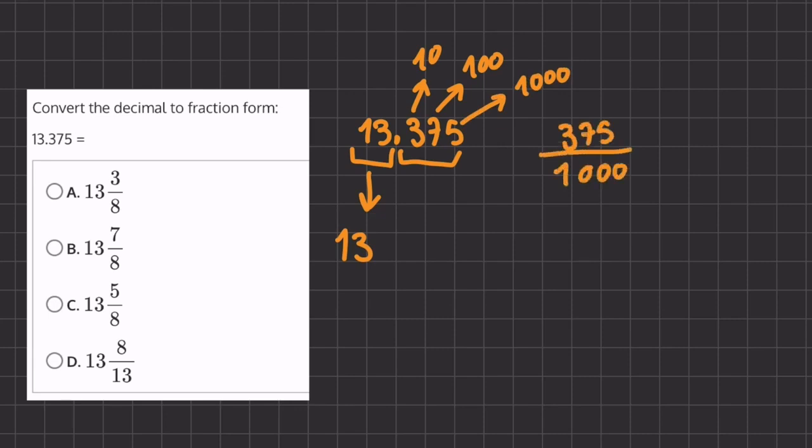Now we have our fraction, and we need to simplify it. We can divide the numerator and denominator by 125.